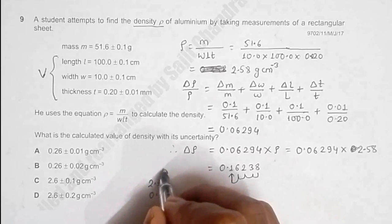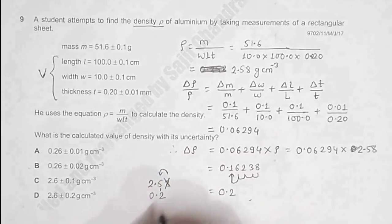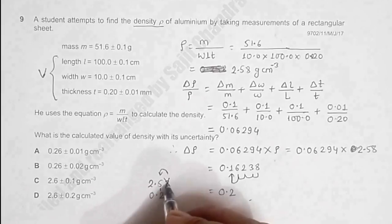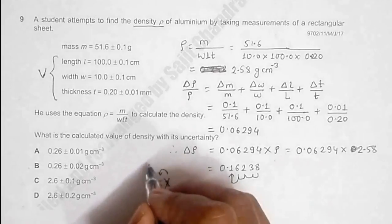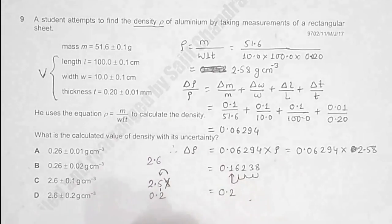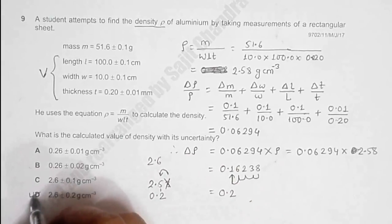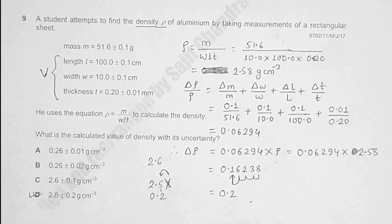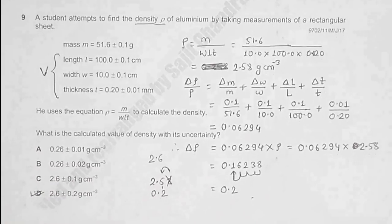off it will be 2.6. So it should be 2.6 ± 0.2, which is given in choice D. So choice D is the correct answer.